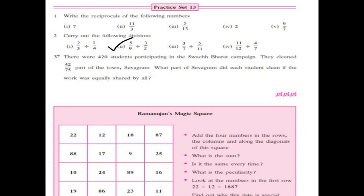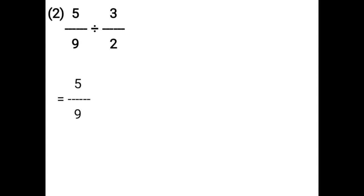5 upon 9 divided by 3 upon 2. Write the first fraction, 5 upon 9, as it is. Change division into multiplication. The second fraction, 3 upon 2, becomes its reciprocal: 3 upon 2 becomes 2 upon 3. Now multiply numerator and denominator. That is equal to 10 upon 27.